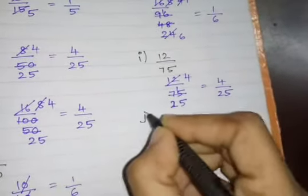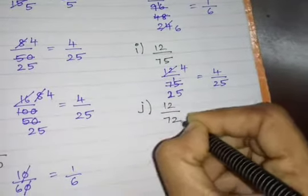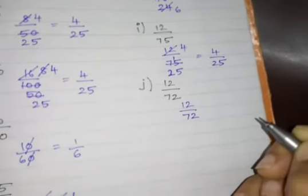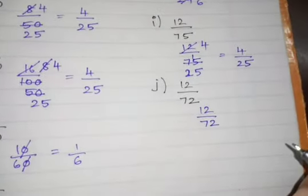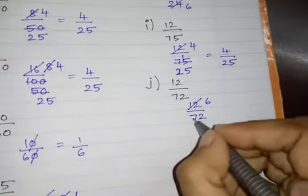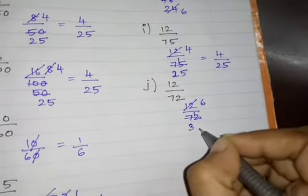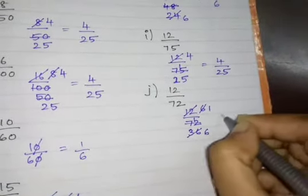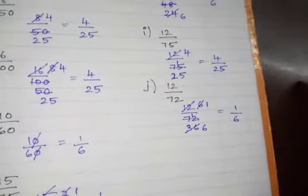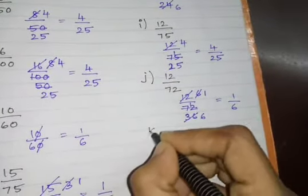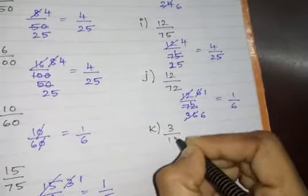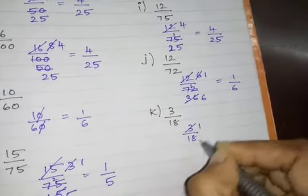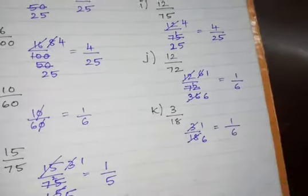Next, J problem: 12 by 72. Finding the simplest form: 2 sixes are 12; 2 threes are 6; 6 ones are 6, 6 sixes are 36. So the answer is 1 by 6. Then K problem: 3 by 18. 3 ones are 3, 6 threes are 18. So the answer is 1 by 6.